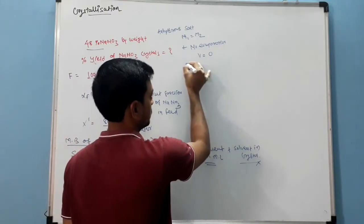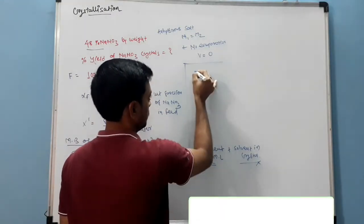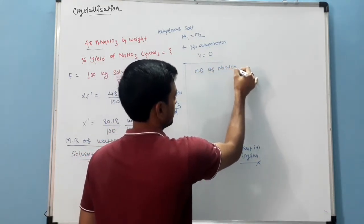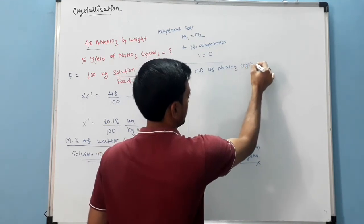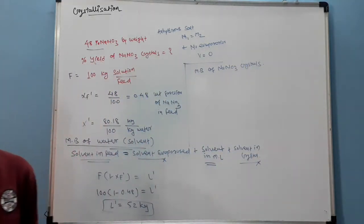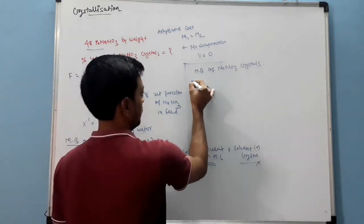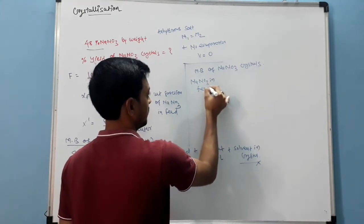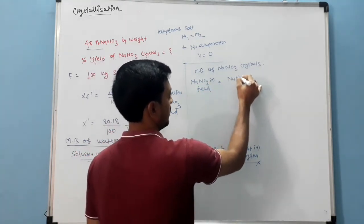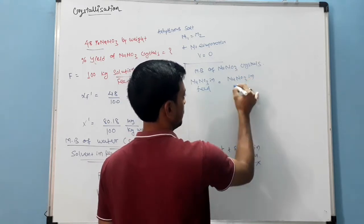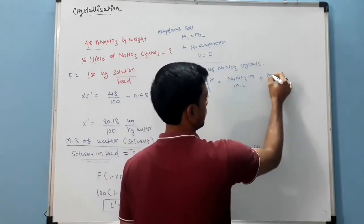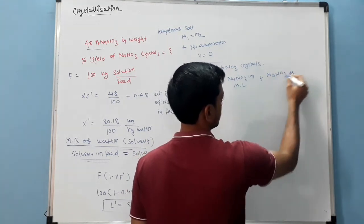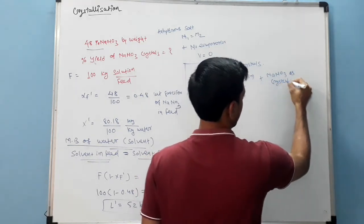Solute material balance. Material balance of NaNO3 crystals. NaNO3 in feed is equal to NaNO3 in mother liquor plus NaNO3 as crystals.